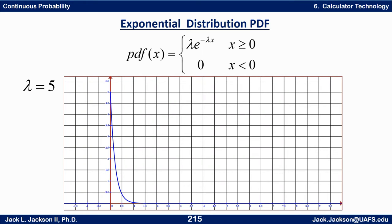Let's look at another class of continuous distributions. We've looked at uniform and triangular — now we're going to look at something called exponential distributions. The formula for the PDF of x for an exponential distribution is lambda times e to the minus lambda x, where the Greek letter lambda is some specific positive number. For example, lambda equals 0.5.